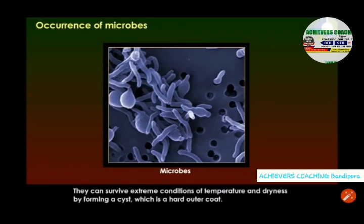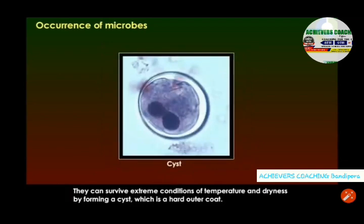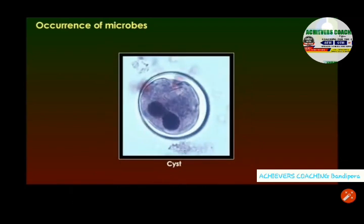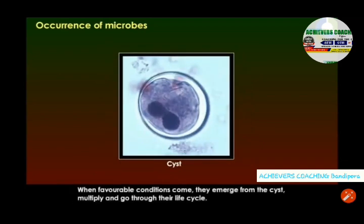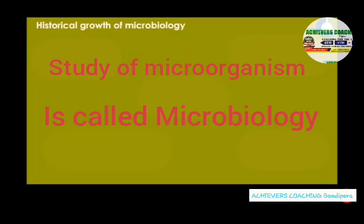They can survive extreme conditions of temperature and dryness by forming a cyst, which is a hard outer coat. When favorable conditions come, they emerge from the cyst, multiply, and go through their life cycle.